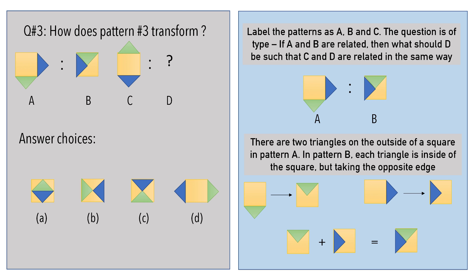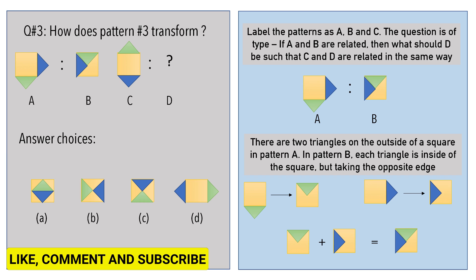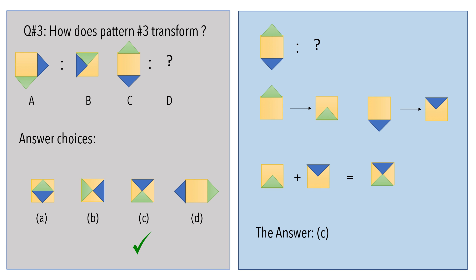Similarly, the blue triangle moves inside, taking the opposite edge. Pattern B is a combination of the two resulting states. Take pattern C and start moving the triangles that are outside the square to the respective opposite edges as shown. The answer is option C.